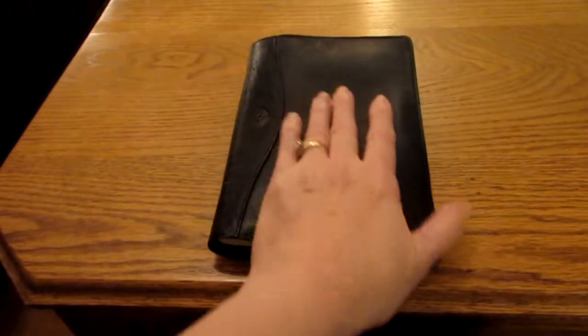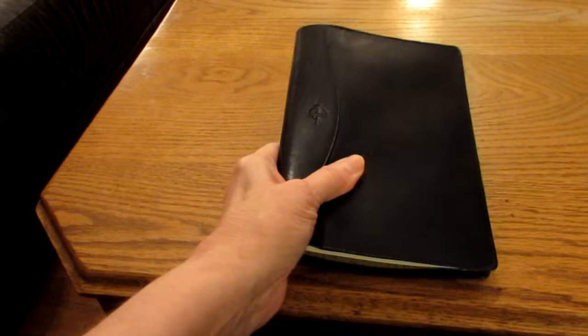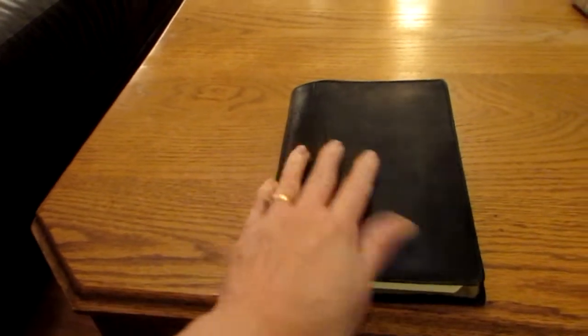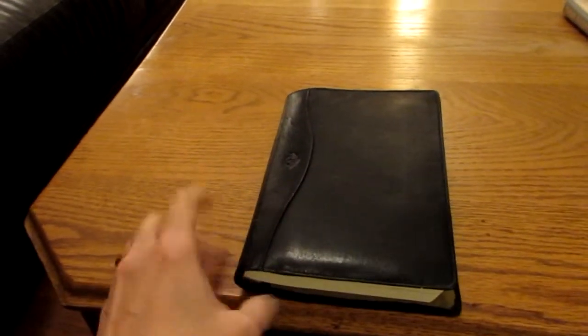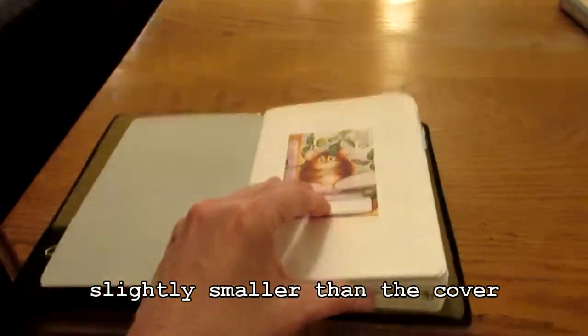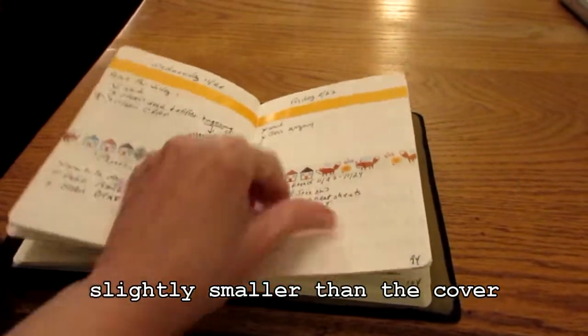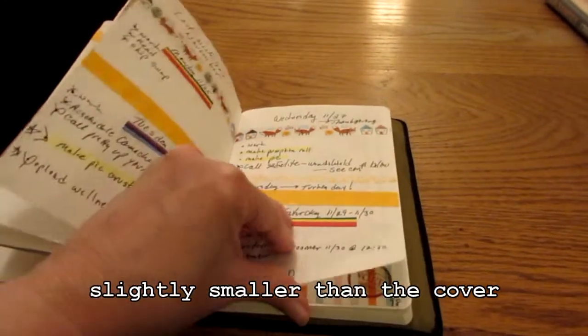So anyway, this was my dad's cover and that's why I use it. It just reminds me of my dad. And inside I have a Stalogy B6, which is slightly smaller than this planner, but not terribly.